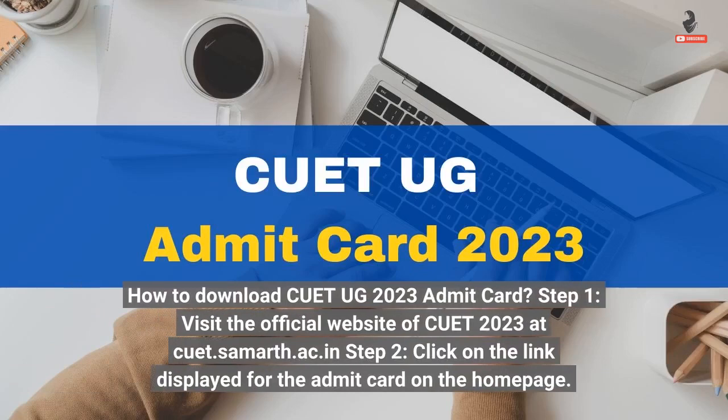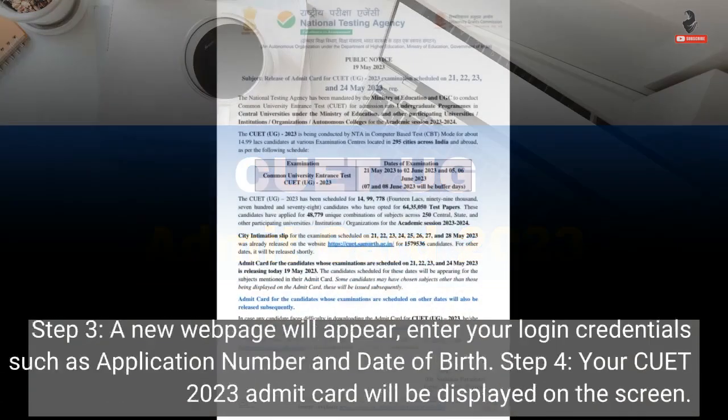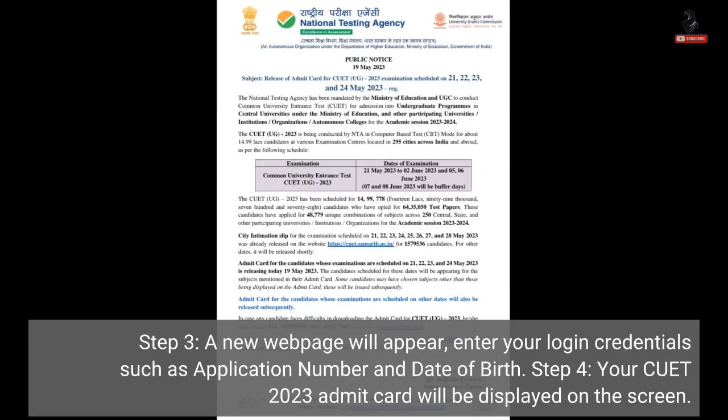How to download CWIT UG 2023 Admit Card? Step 1: Visit the official website of CWIT 2023 at CWIT Samarth A.C.N. Step 2: Click on the link displayed for the Admit Card on the home page. Step 3: A new webpage will appear. Enter your login credentials such as application number and date of birth.